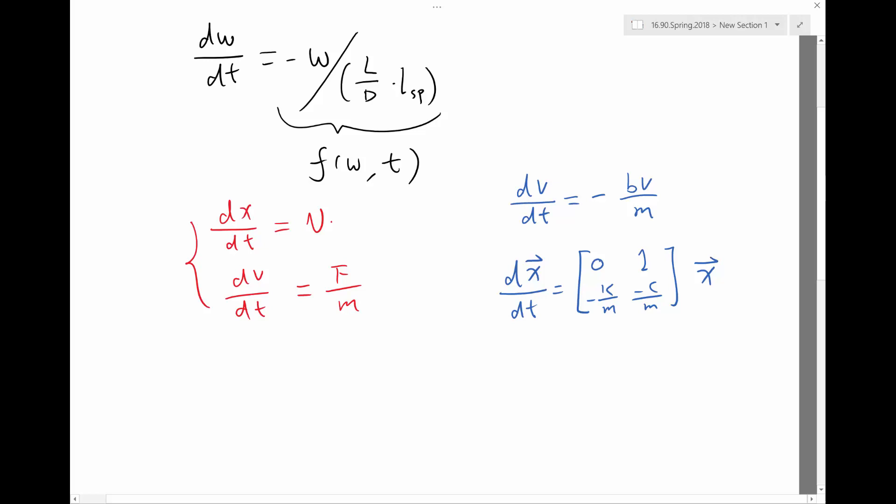So basically, my X being a vector is a vector of two variables, which is a function of time.